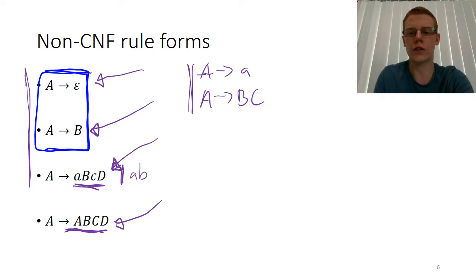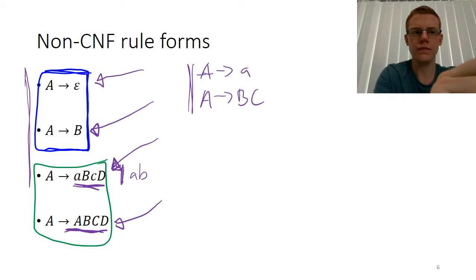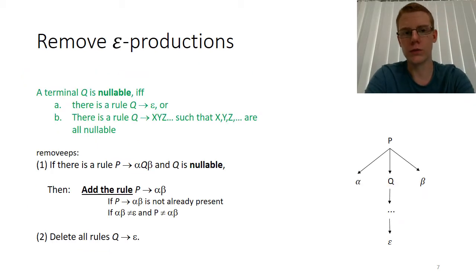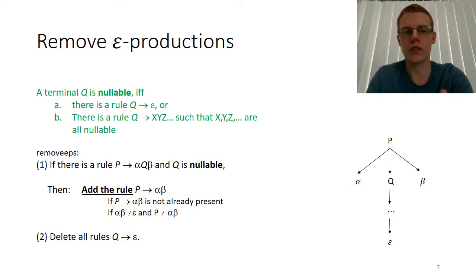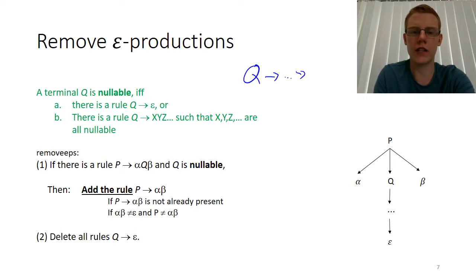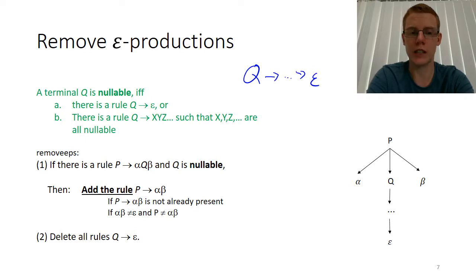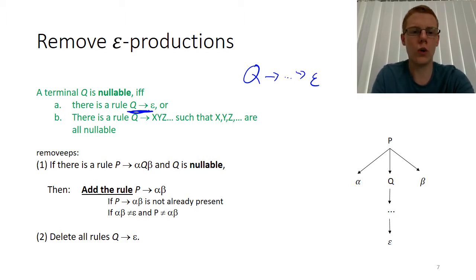The first set of rule productions we call epsilon productions because they produce empty strings. To remove them, we first find all non-terminals that can eventually turn into just the empty string — we call these nullable. A non-terminal Q is nullable either if it directly turns into epsilon, or if it has a rule where the right-hand side consists only of non-terminals that are all nullable.